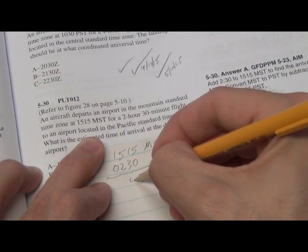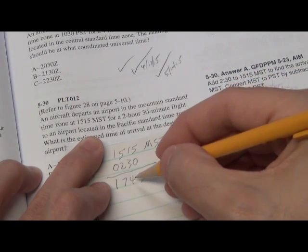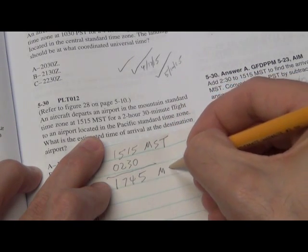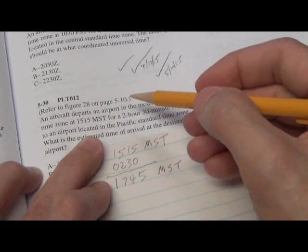So 3, 4, 5, and 2 are 7. So 1745, he lands at 1745 Mountain Standard Time. Yes? Now we can look to the rest of the question.